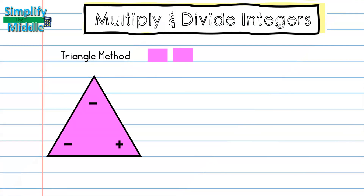Now I'll introduce the triangle method — a really easy method because there's not a lot to remember. You draw a triangle on your paper and place two negatives and one positive in it. Cover the two symbols that appear in your problem, and whatever symbol remains uncovered is the sign of your answer. You can use this until you become more comfortable with the rules.